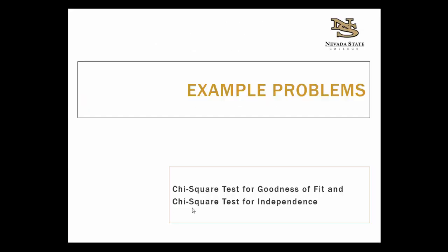I encourage you to attempt what you can in the example problems before you watch the video. Maybe attempt doing steps one and two for all of them, then watch the first goodness of fit example, attempt the rest on your own, then watch the chi-square test for independence, and attempt the second one before watching the solutions. The best way to make sure you understand something is to test yourself and then go back and see what you understood and what you maybe didn't understand so well.